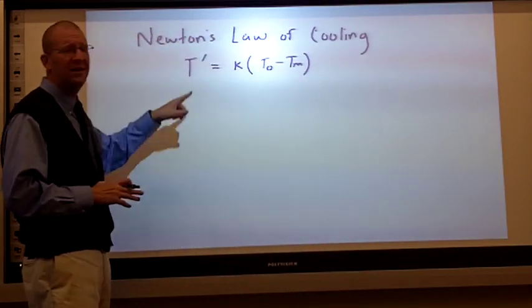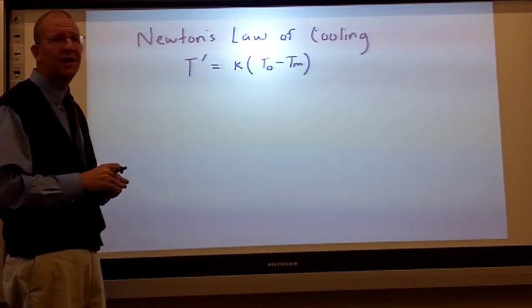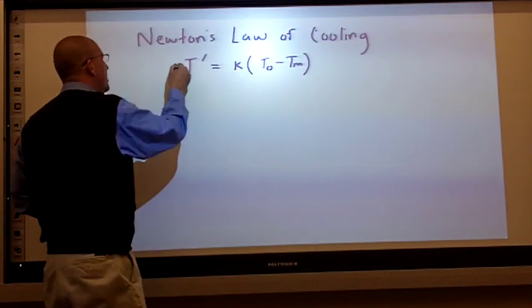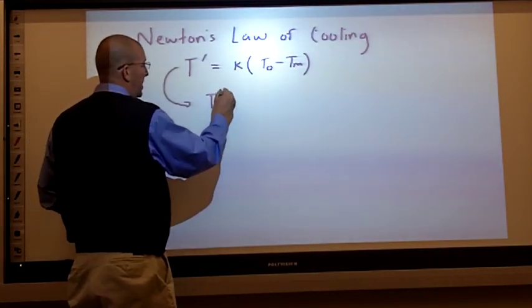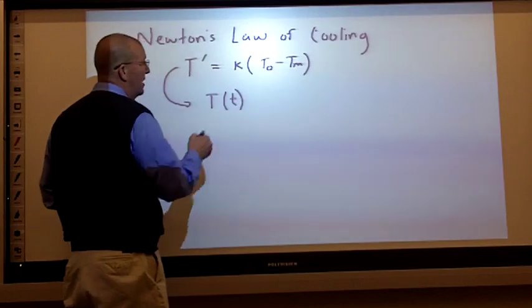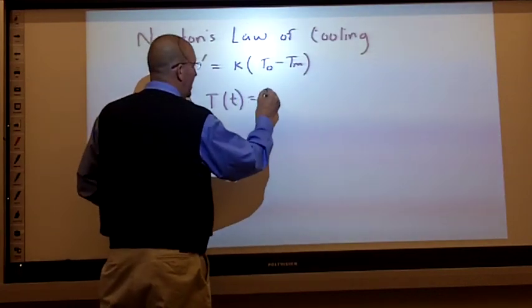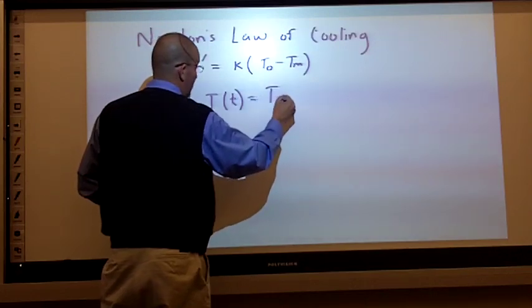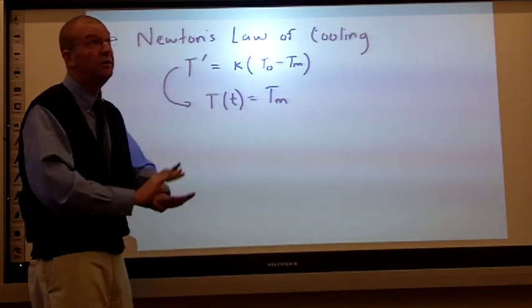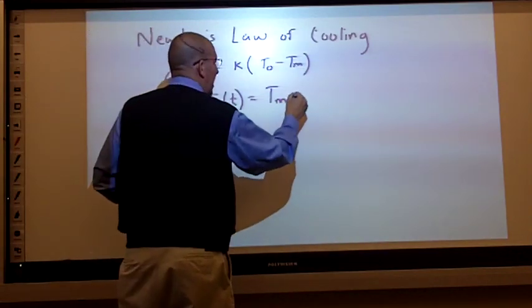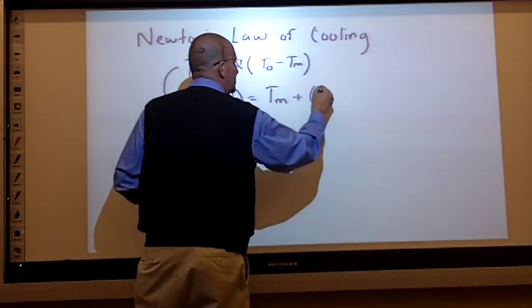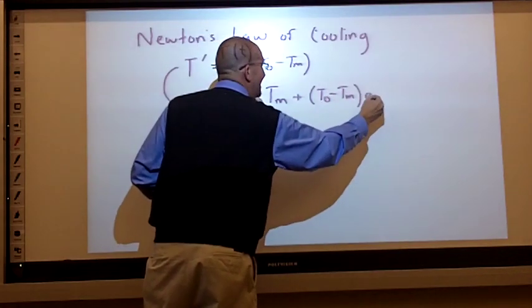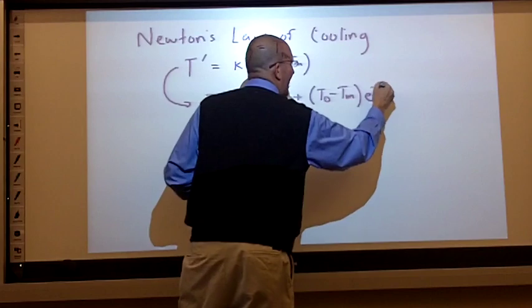Now, I call that T prime for the rate of change. When you study calculus, you'll learn how to solve this equation. And eventually, you will get this version. And this is what we use in our class. The temperature at any time T is the temperature of the medium, the surrounding area, plus this difference between the initial temperature and the medium, times E to the negative KT.